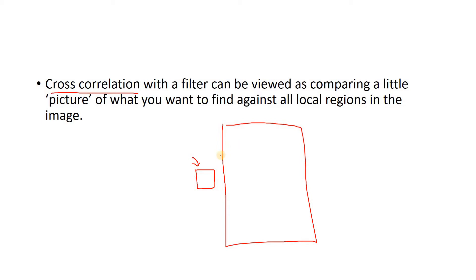We get minimum values at those locations where the reverse of this particular pattern is present — where the pattern and that location of the bigger image are not matching at all. And where an exact match occurs, there we will be getting maximum response. So the problem is: we need to find out what small pattern we should search in a bigger image to detect blobs. That is, what should be the pattern for blob detection.